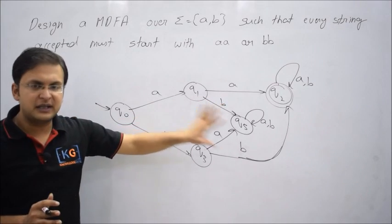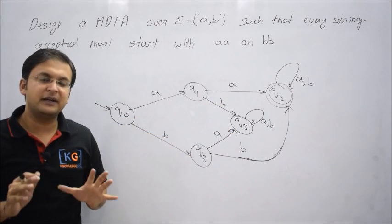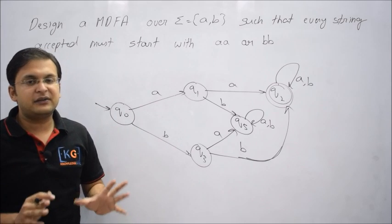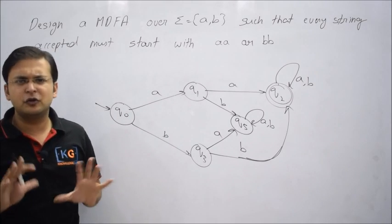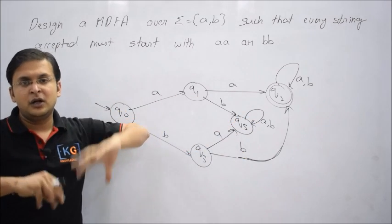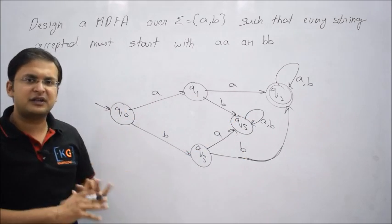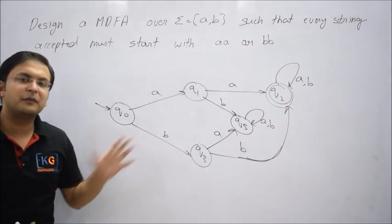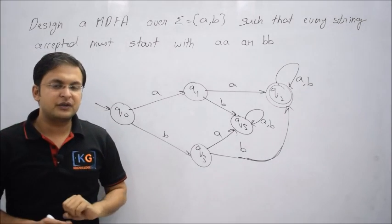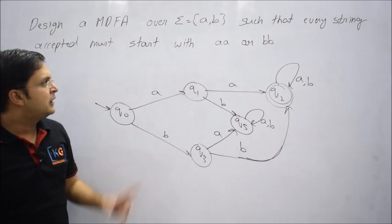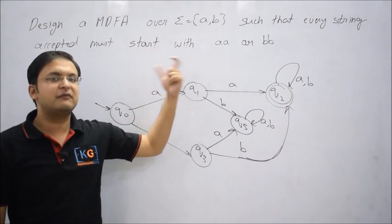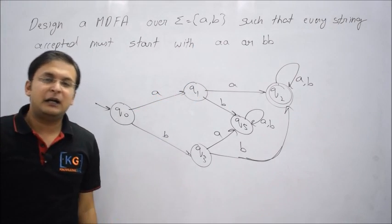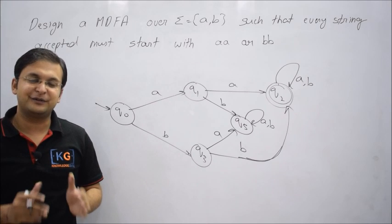Right now I am concentrating on designing DFAs. We'll understand how to minimize the DFA later — that is done in minimization of finite automaton. In the next video, let me try two more cases: what happens if the condition comes at the end, and what happens if it comes as a substring. Thank you.